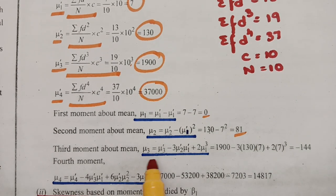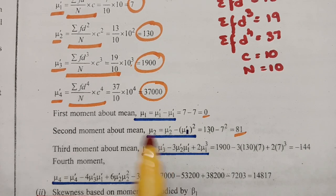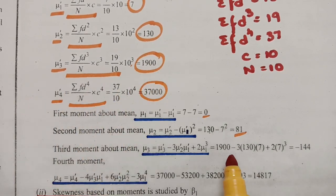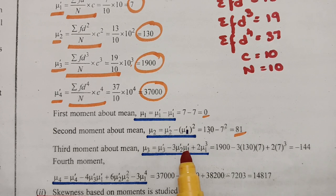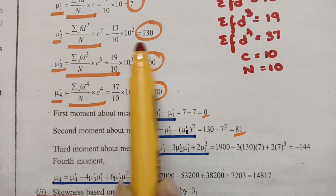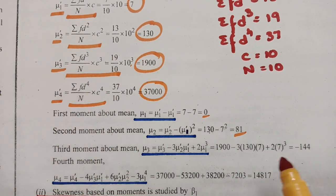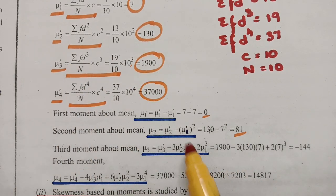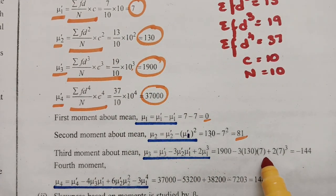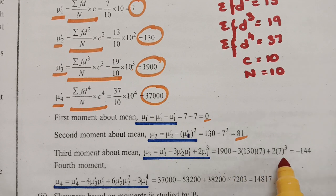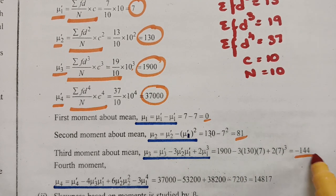The third central moment: μ₃ = μ₃' − 3μ₂'μ₁' + 2(μ₁')³ = 1900 − 3×130×7 + 2×7³. After substituting these values, μ₃ = −144.